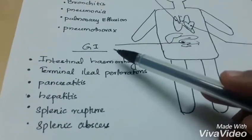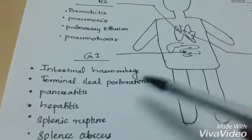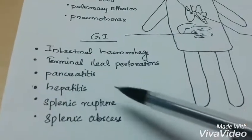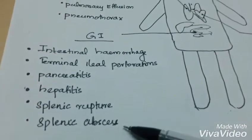Gastrointestinal system complications include intestinal hemorrhages, terminal ileal perforations, pancreatitis, hepatitis, splenic rupture, and splenic abscess.